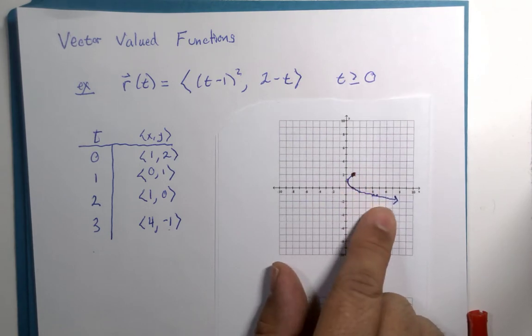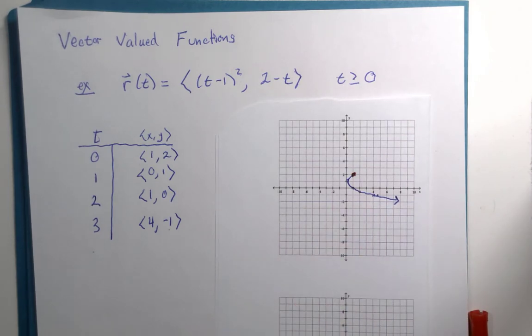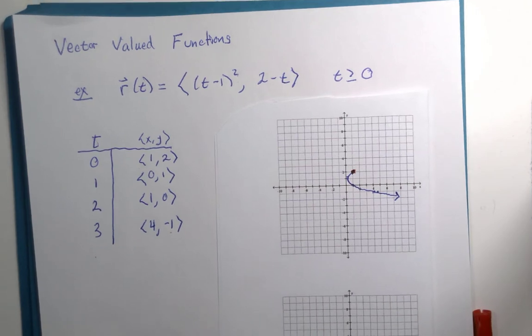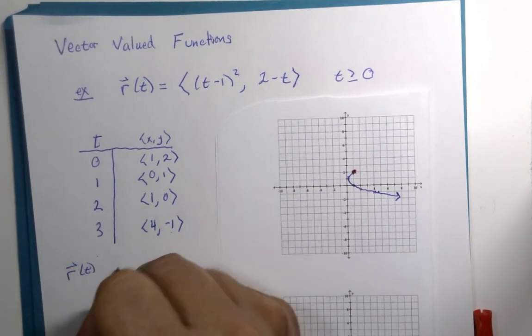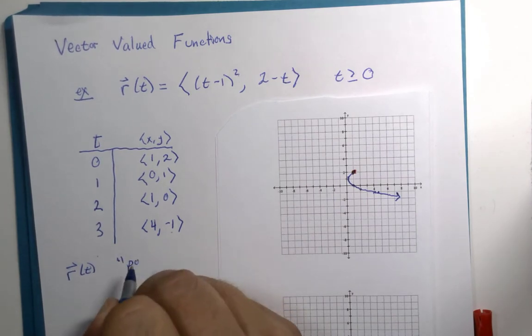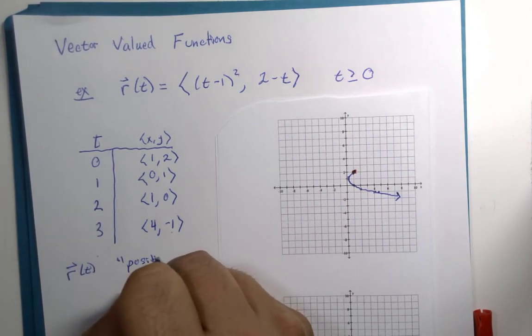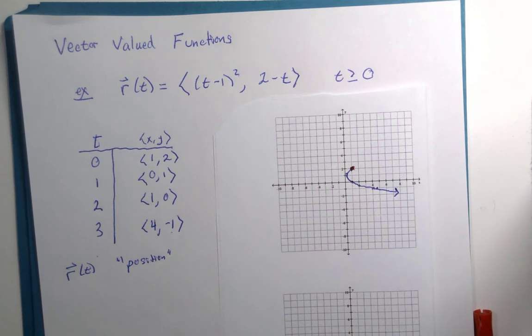Think of this as a moving object, not as just a parabola. So, this is like the car driving on the parabola road. So, we call R of T position or location. It's where we're located at a period of time.